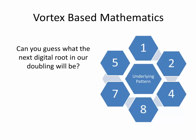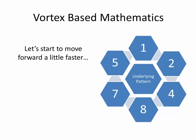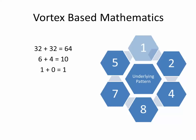Could you guess what the next digital root in our doubling will be? Let's start to move forward a little faster. 32 plus 32 is 64. 6 plus 4 is 10. 1 plus 0 equals 1.